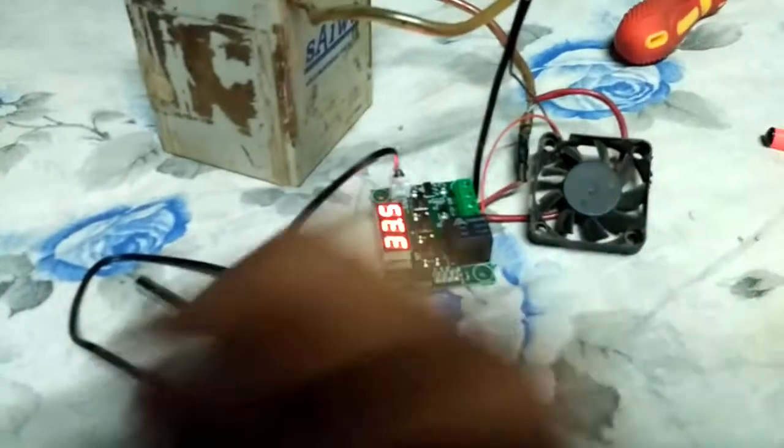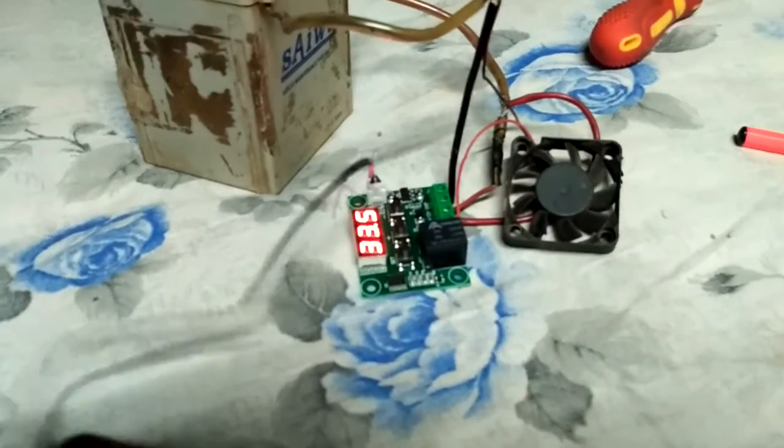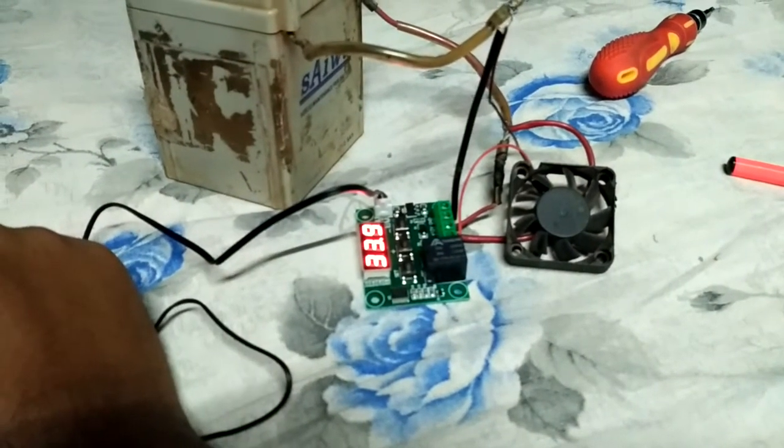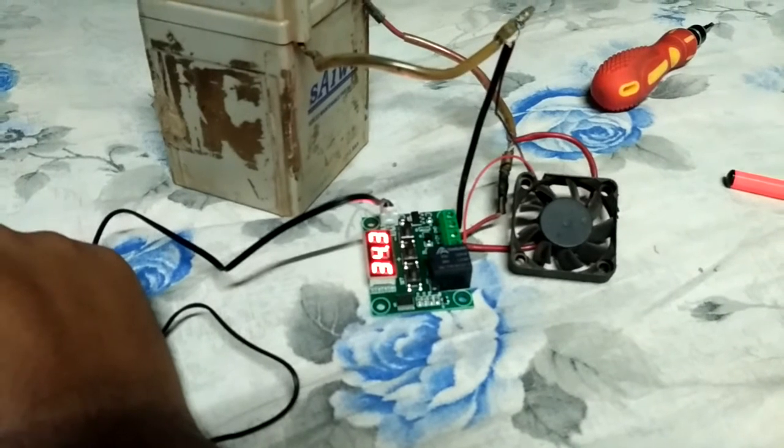See, 33.7. It is off. And we will again rise, and after rising 2 degrees, means it should be 35.5, it will automatically turn on.